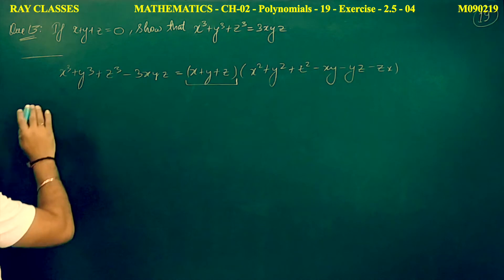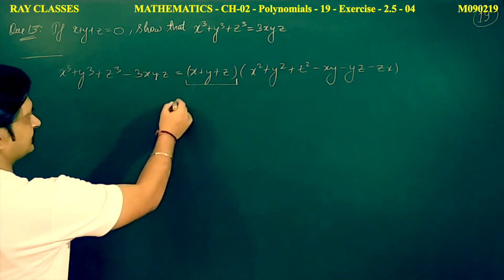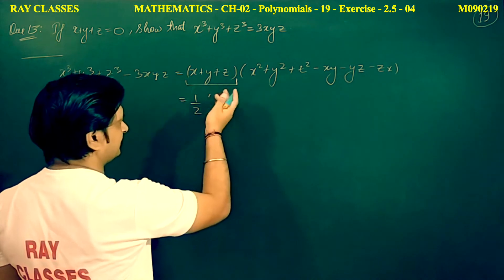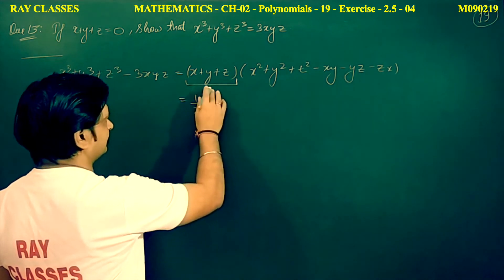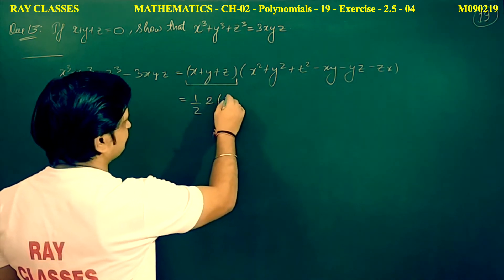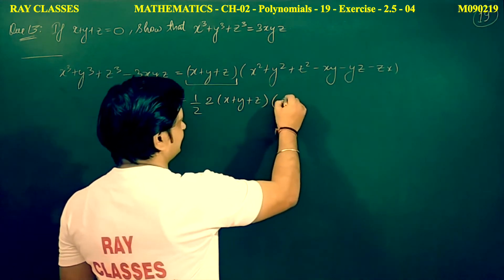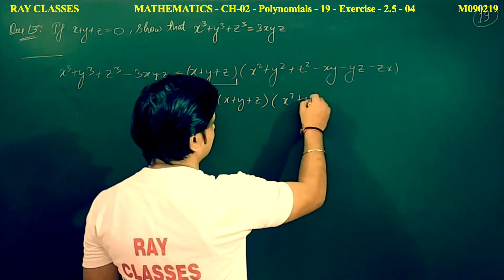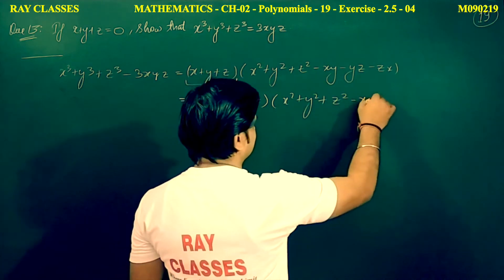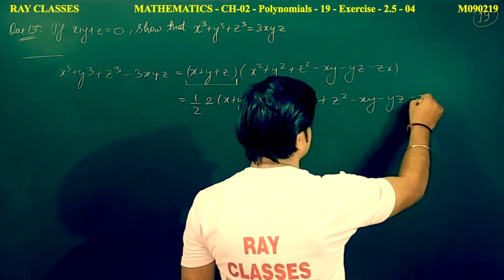We rearrange it: we multiply and divide by 2. So it becomes 1/2 into 2 times (x plus y plus z) times (x squared plus y squared plus z squared minus xy minus yz minus zx).